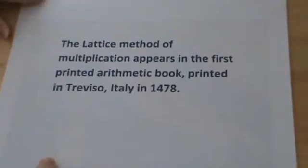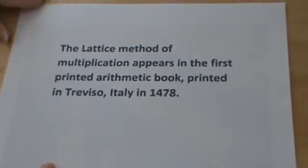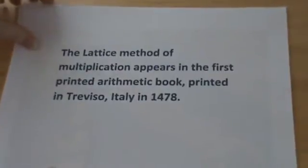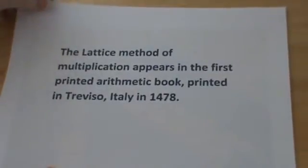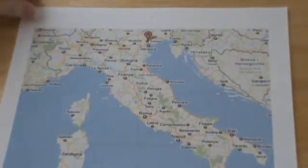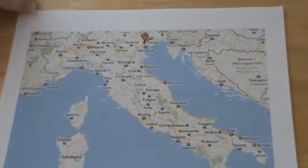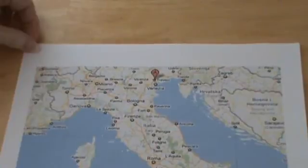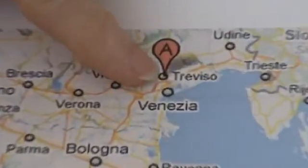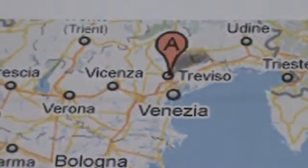The Lattice Method of Multiplication appears in the first printed arithmetic books printed in Trevisio, Italy in 1478. And I've enclosed a map so you can get a visual understanding of where this particular city is. Here we see the map of Italy and here is Trevisio.